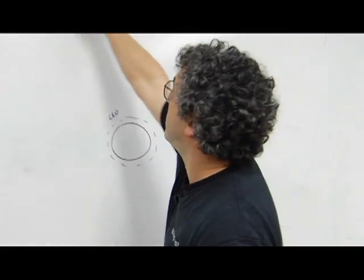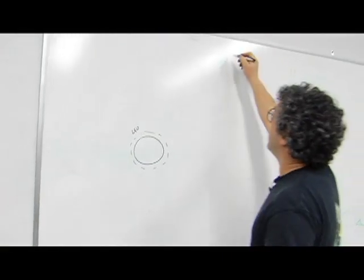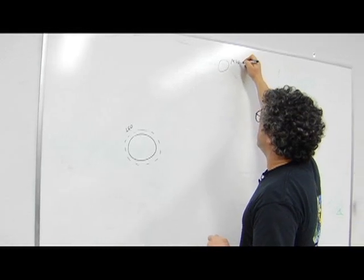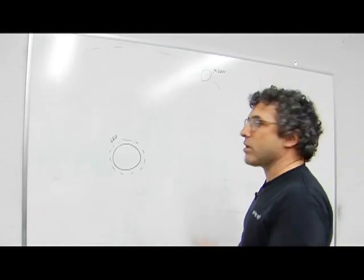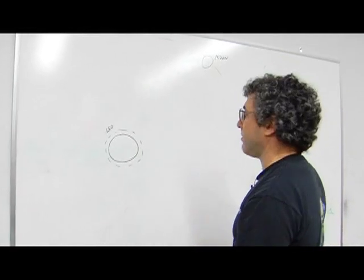Or they can travel real far away. Here would be the Moon, for example. 200, 240,000 kilometers away. It takes a whole month to go around the planet.